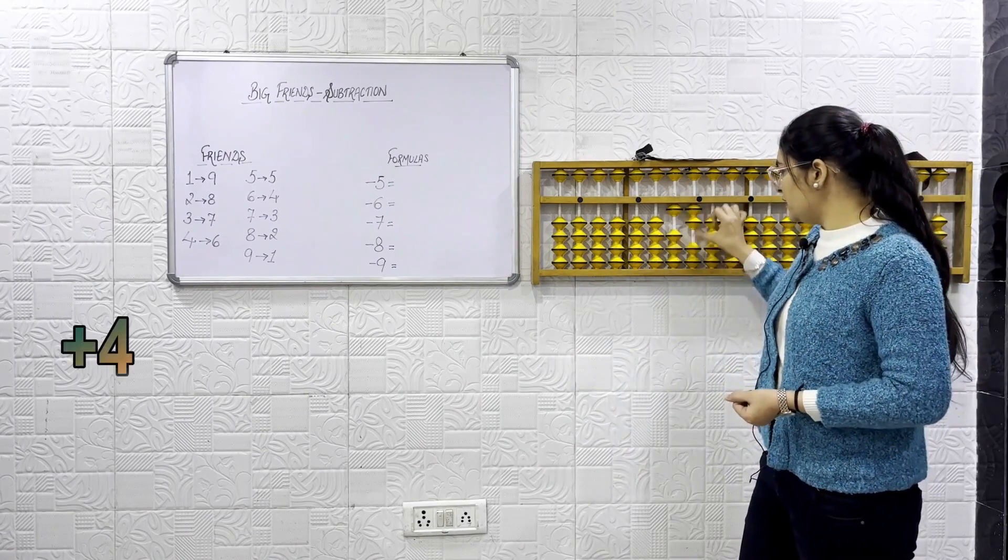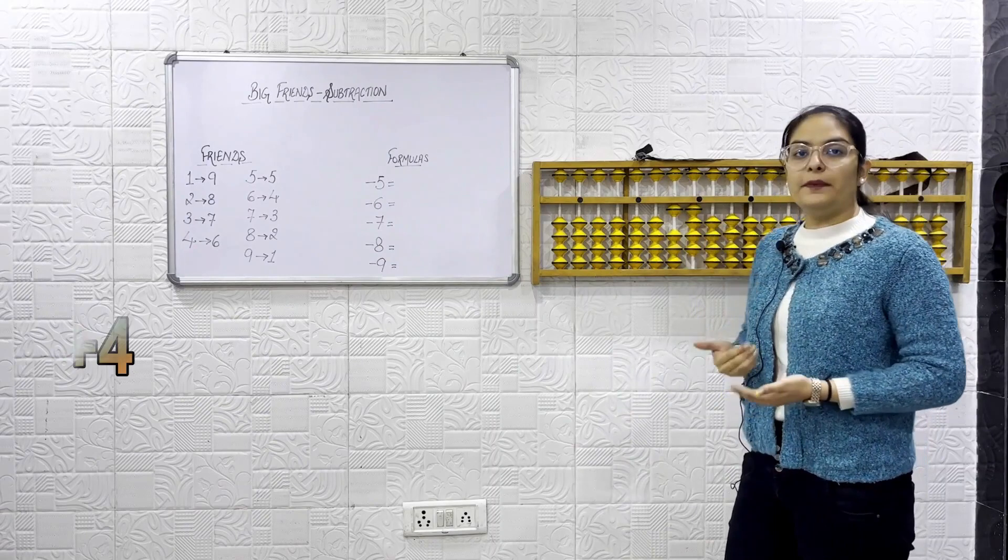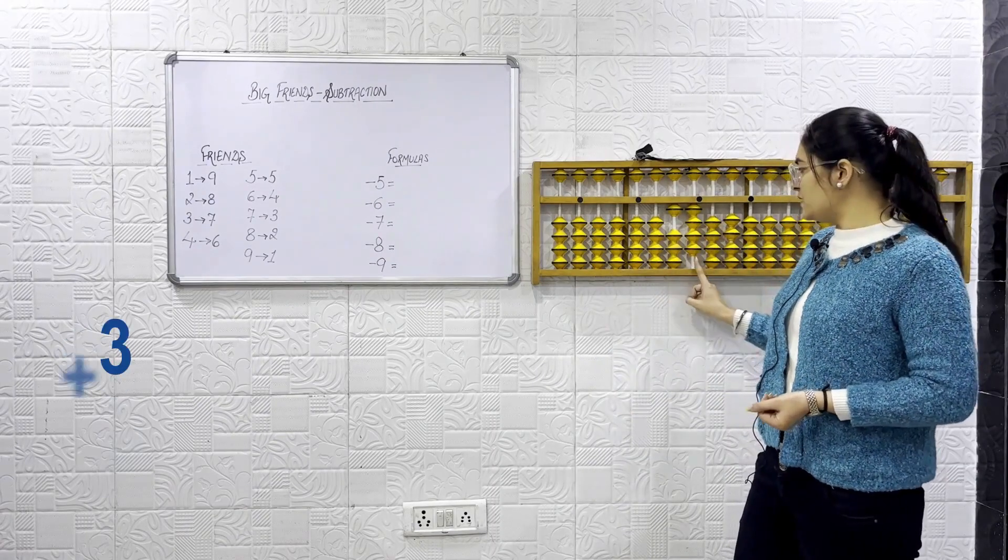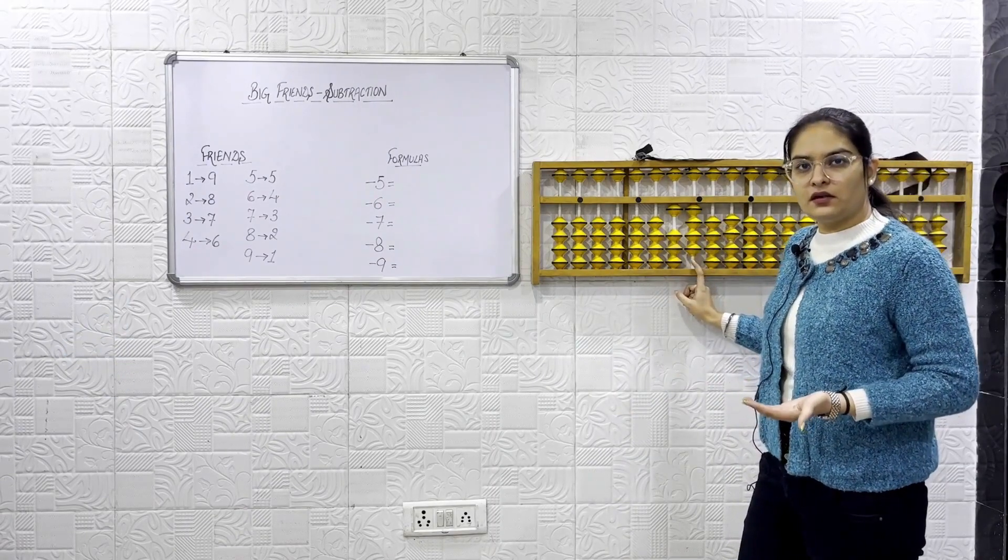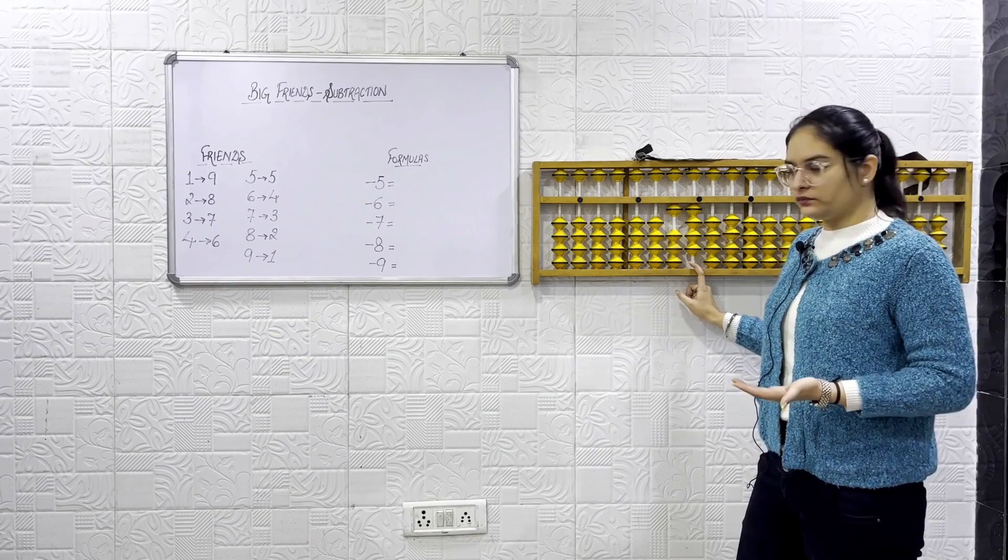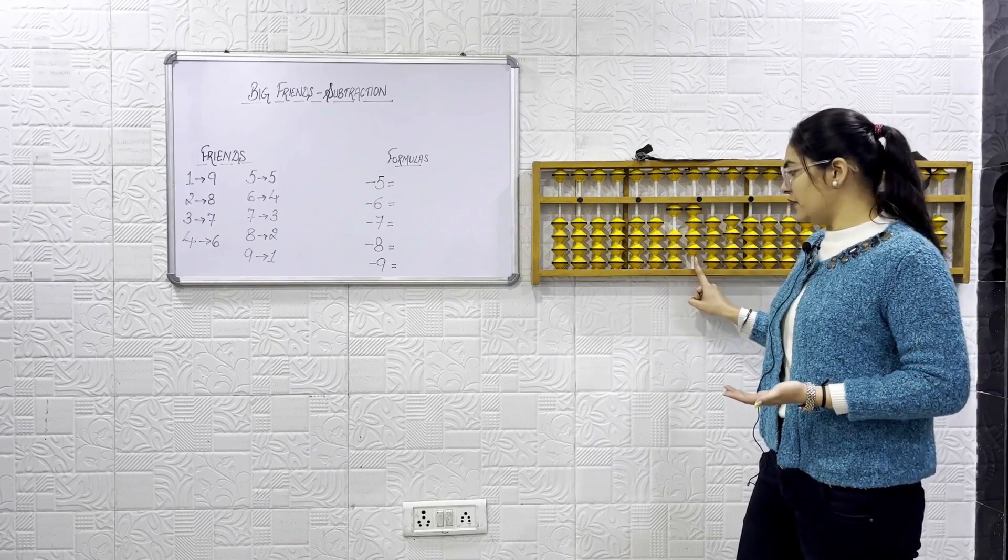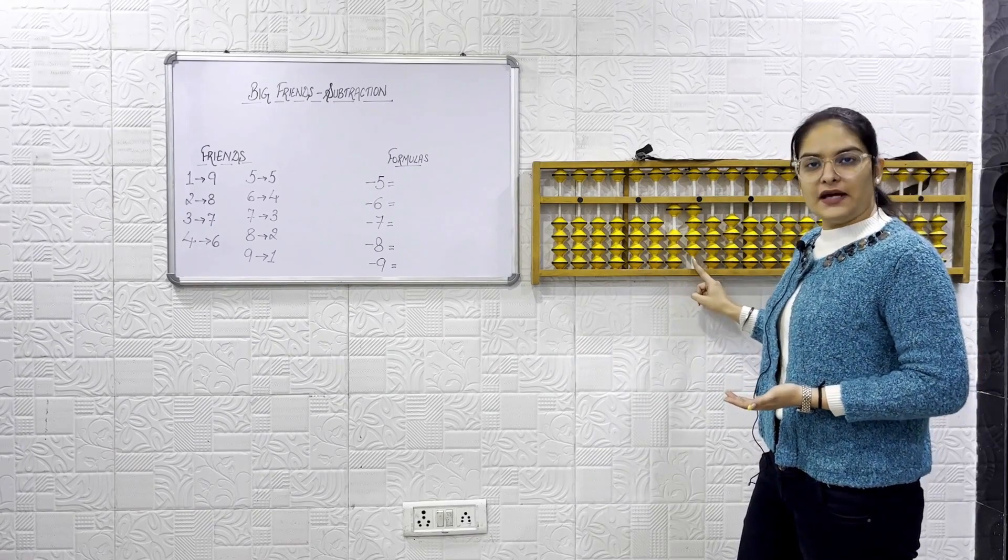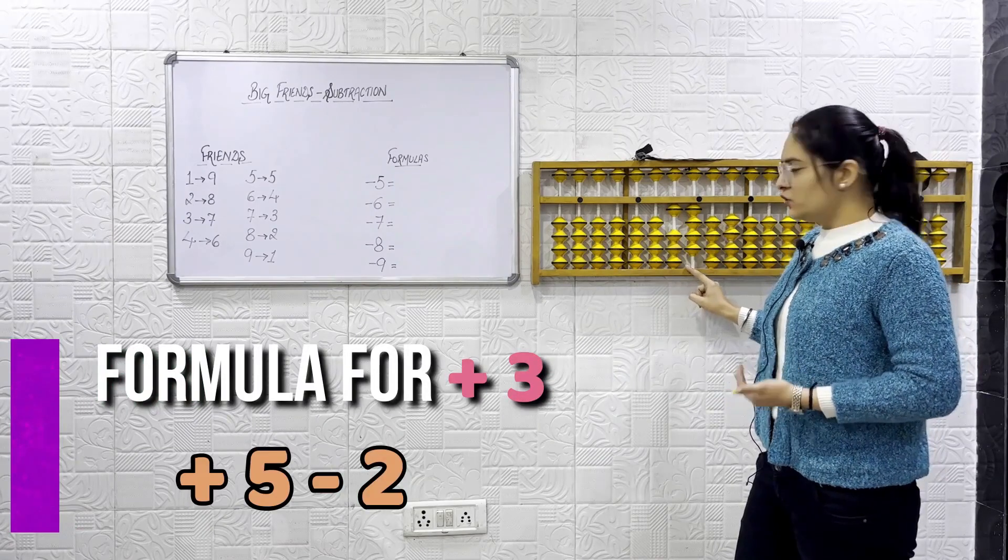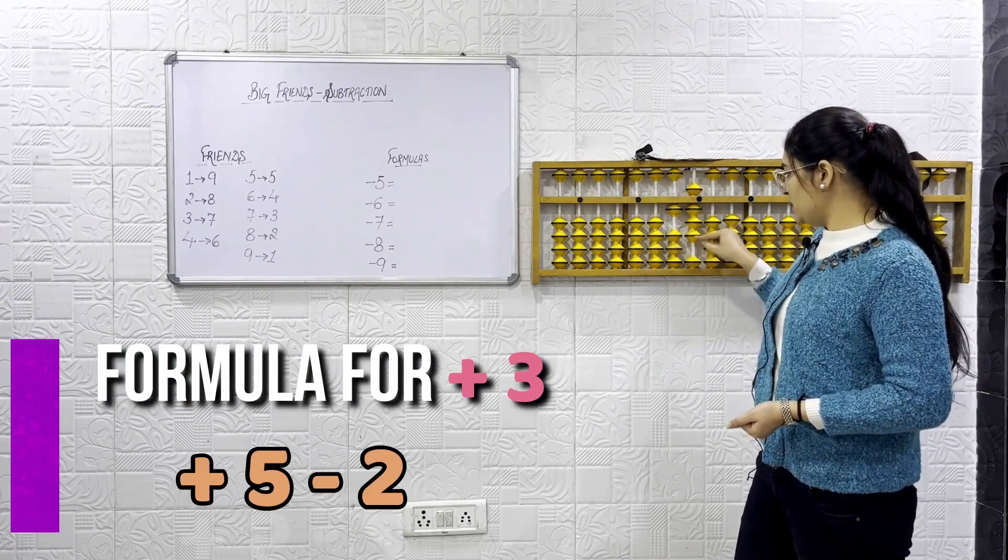Plus 4. Plus 2. Now, plus 3. We have to do plus 3. How can you do plus 3? Someone tell me the formula. We will use small friends. Formula will be plus 5 minus 2.